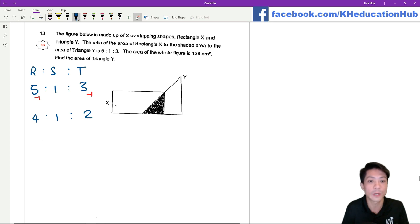Okay, this is the ratio of the rectangle which is unshaded. Maybe I can write rectangle unshaded to the shaded part to the triangle that's unshaded.